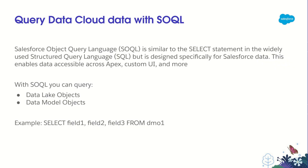Now for querying Data Cloud data with SOQL. Salesforce Object Query Language, or SOQL, is similar to SQL — it's a SELECT statement you can use to query Salesforce data. This enables you to access data across Apex, custom UIs or Lightning components, or even in Flow. With SOQL and Data Cloud, you can query our Data Lake Object — the source data brought into the data lake — as well as our Data Model Object, which is the harmonized view where all different data sources are brought into a single model like Account or Contact.